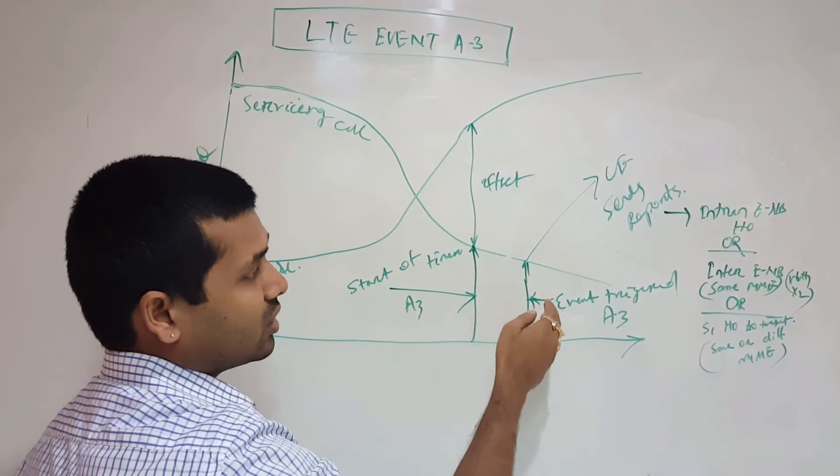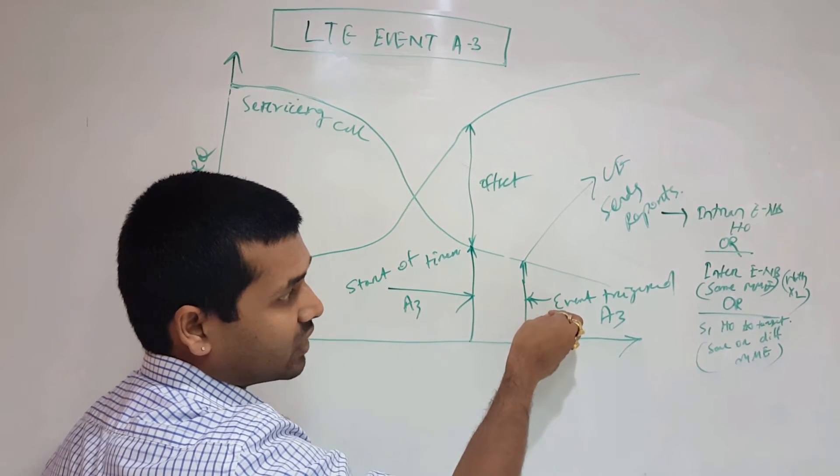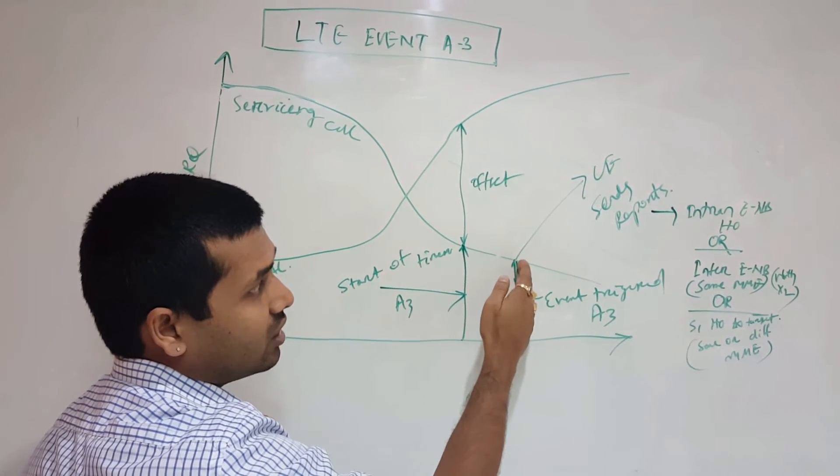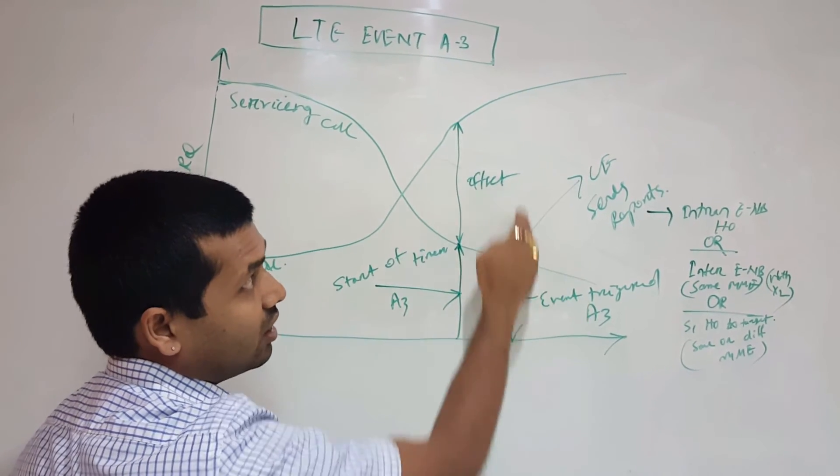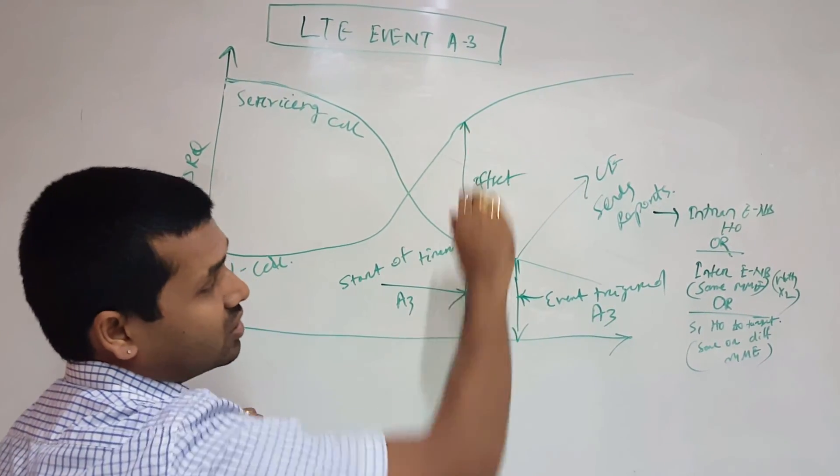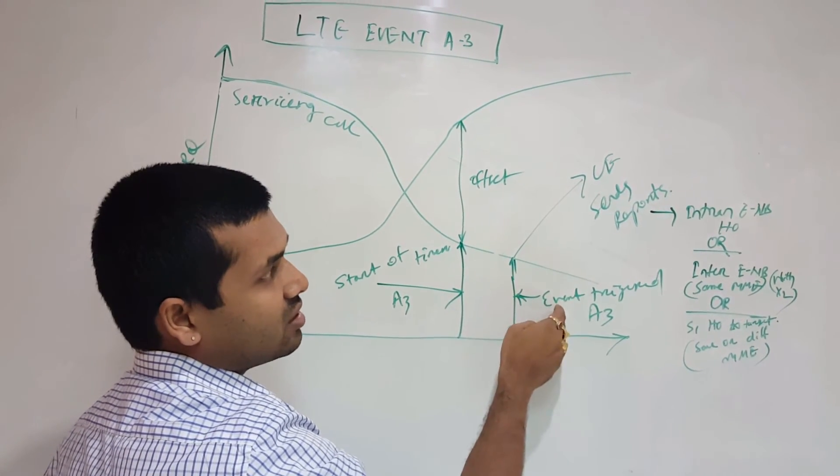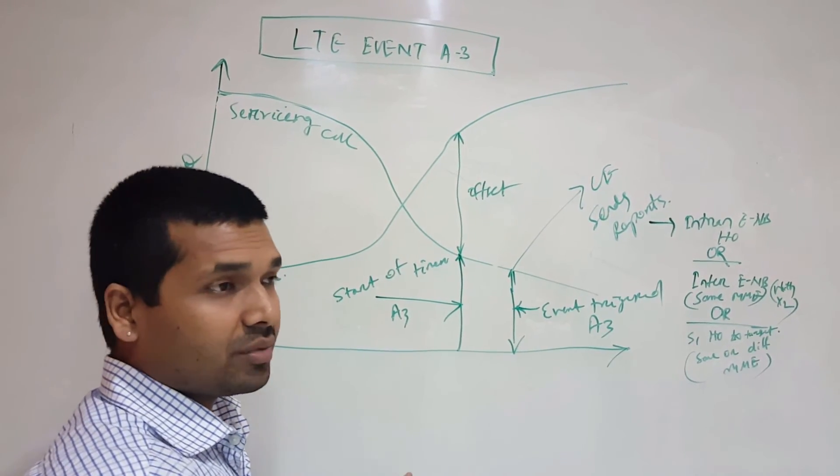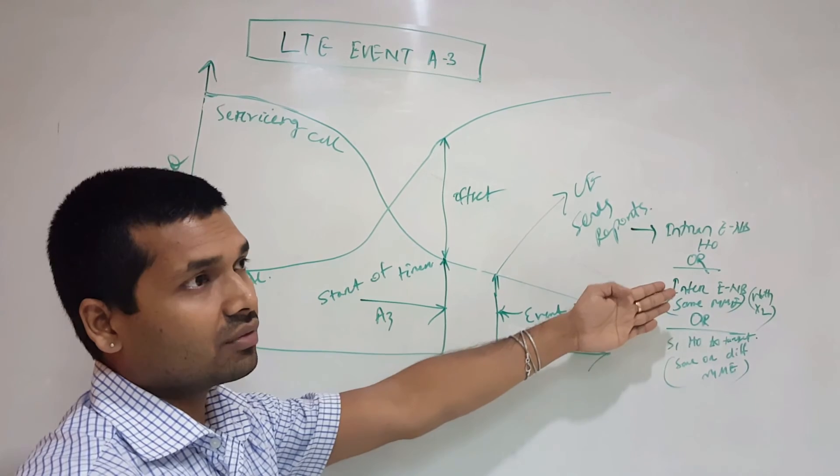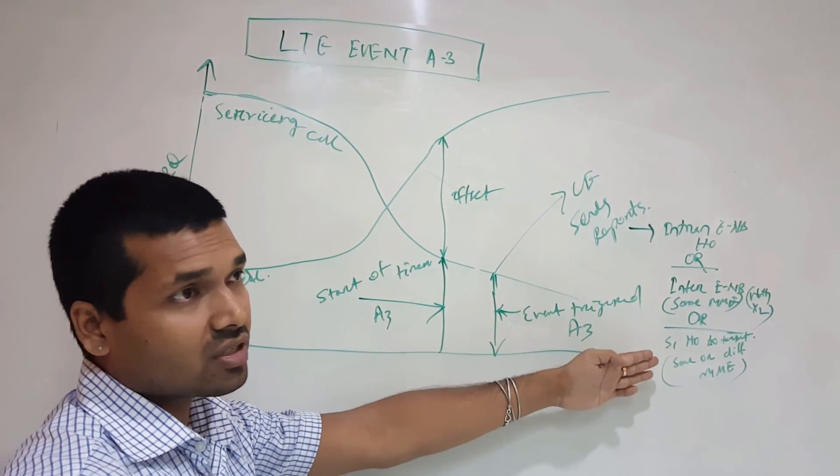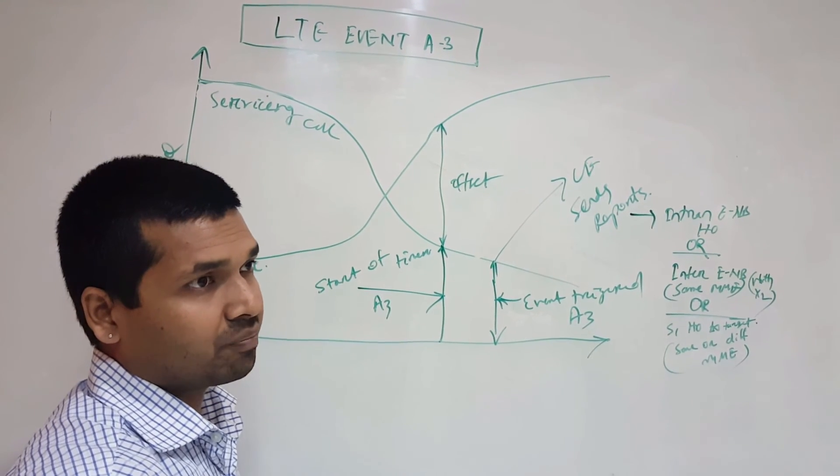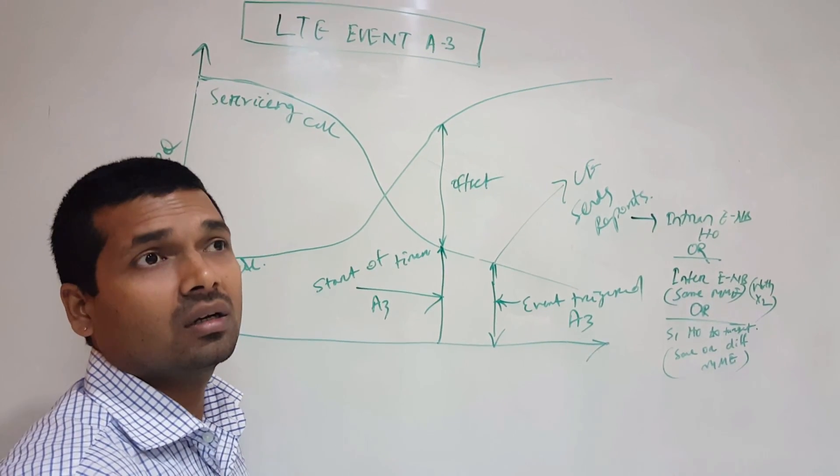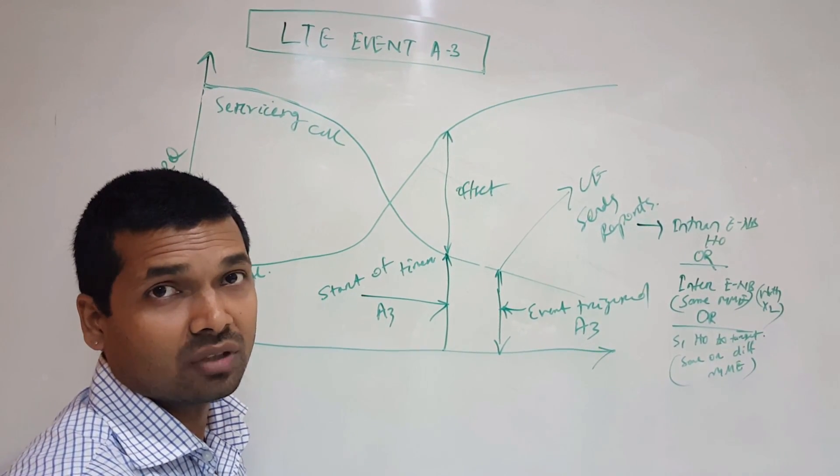A3 is triggered when the condition is met: our serving cell is still bad and our neighbor is better by a certain offset. After A3 is reported to the eNodeB, we can make an intra-eNodeB handover, inter-eNodeB handover via X2 interface, or inter-eNodeB handover via S1 interface to other MME cells. Thank you for watching. In the next session we'll be covering A4, A5, B1, and B2 events.